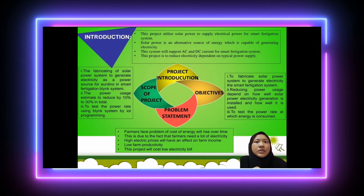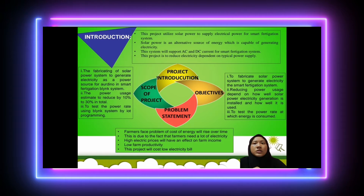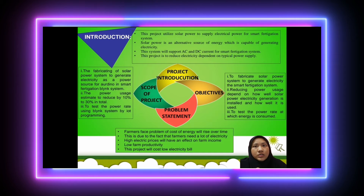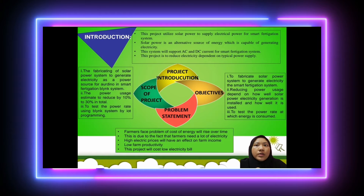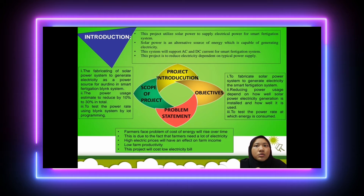The objectives are: one, to fabricate a solar power system to generate electricity for the smart fertigation system; two, to reduce power usage by optimizing how well solar power electricity generation is installed and used; three, to test the power rate at which energy is consumed.